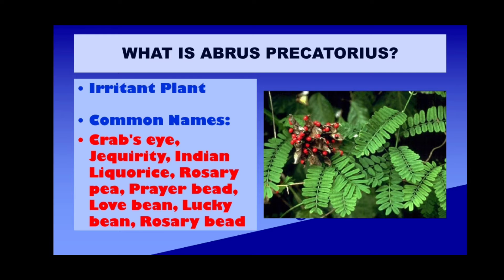It's a plant — specifically, an irritant plant. We have a number of poisons which are classified as irritants. We will refresh our memory with the classification a little later, but first let us look at the common names of this particular plant. There are so many, as you can see on this slide. You can call this plant crab's eye, jacquiriti, Indian licorice, rosary pea, prayer bead, love bean, lucky bean, rosary bead, and many more. These are only some of the names used to refer to this plant.